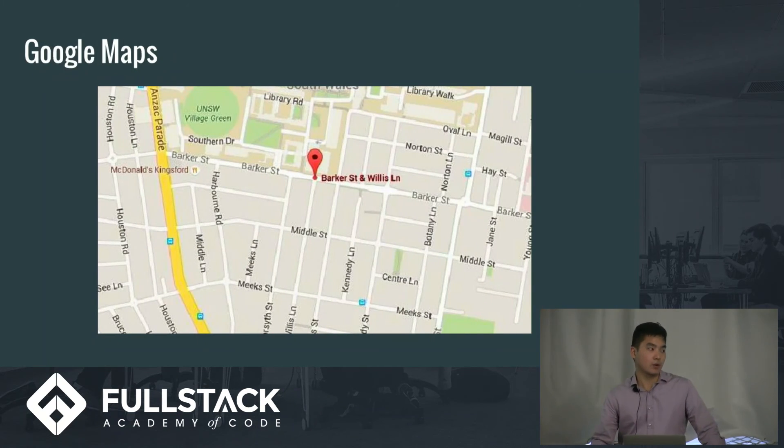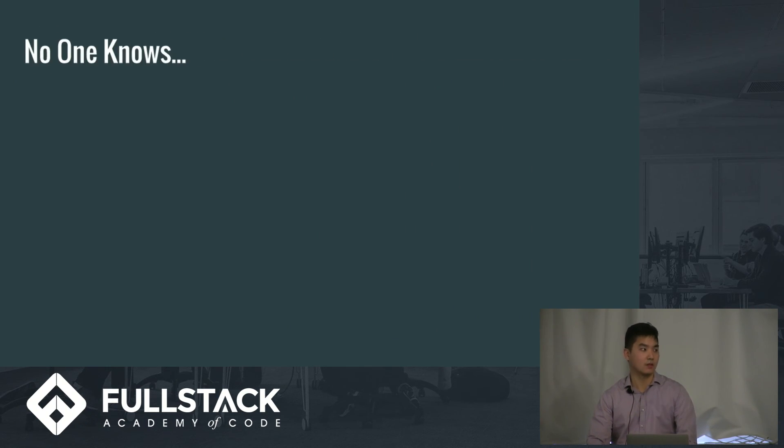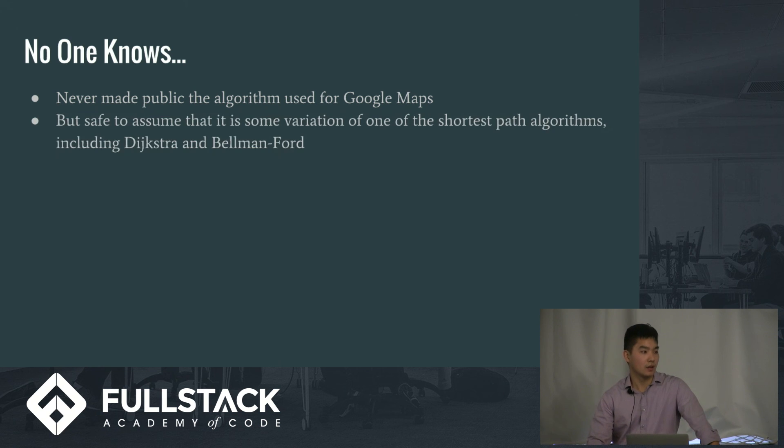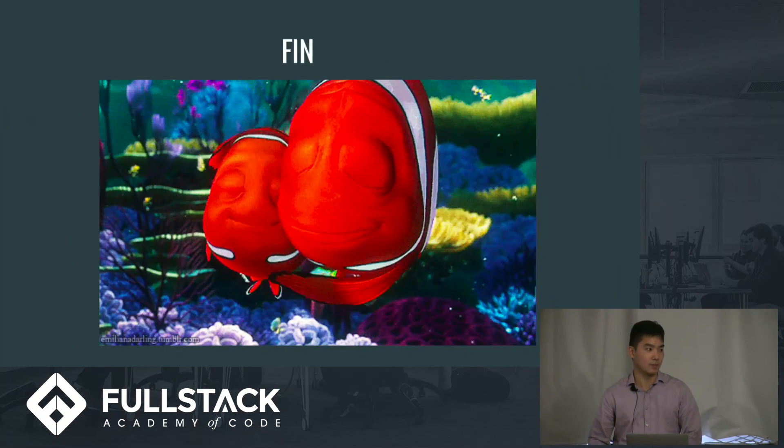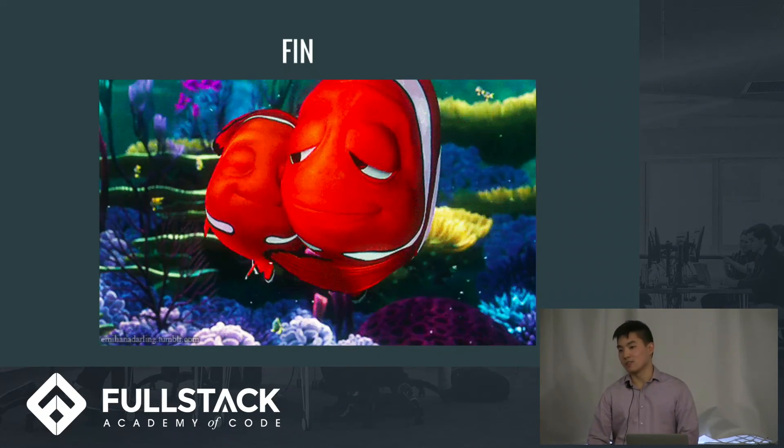So back to our original question. How does Google Maps figure out the shortest path for you? Well, the answer is no one knows, because they've never made it public what algorithm they use. But it is likely to be one of the shortest path algorithms out there. Either Dijkstra, Bellman-Ford, or any of the other ones. Regardless, you do know that using Dijkstra and Bellman-Ford will always help you find Nemo. So that's the end of my lecture. Thank you for listening.